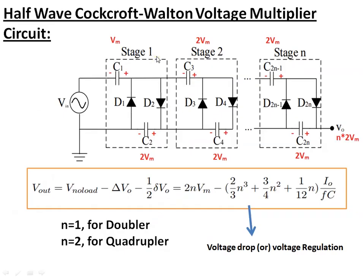This is the half wave Cockroft-Walton voltage multiplier circuit, which is commonly used in the generation of high DC voltage. This consists of a series of capacitors and diodes, where each stage consists of two capacitors and two diodes. The number of stages present in the multiplier depends upon the output voltage required for your application.